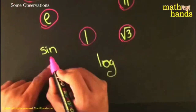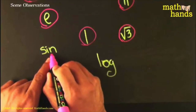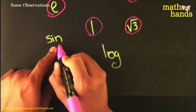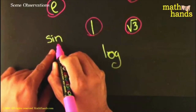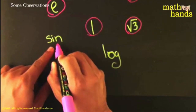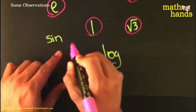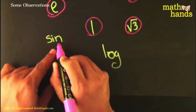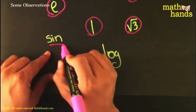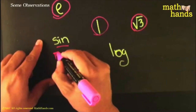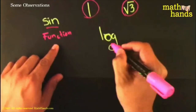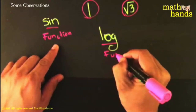But 'sine' by itself - I'm not sure... actually it's not a number. It's not one, it's not two, it's not three, it's not any number at all. This is what we call a function - a function whose domain is angles and whose range is ratios. So you would not circle this - it's not a number, it's a function. And log by itself is also a function, so you would not circle it either.